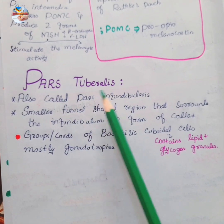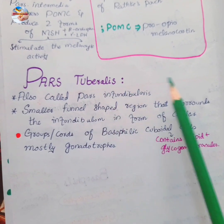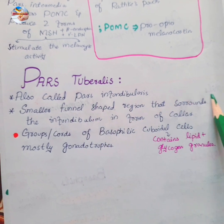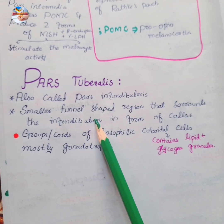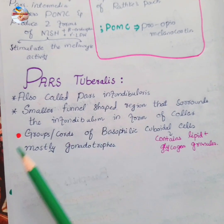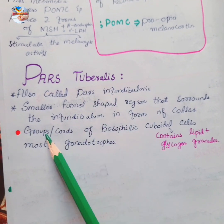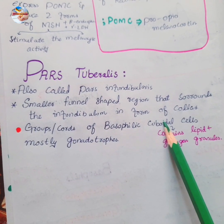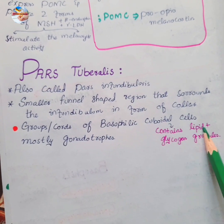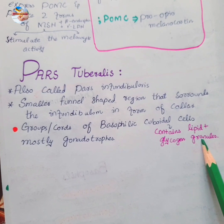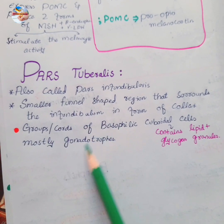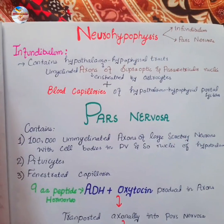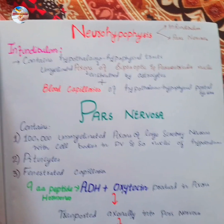The pars tuberalis, also called the pars infundibularis, represents a small funnel-shaped region that surrounds the infundibulum in the form of a collar. It contains groups and cords of basophilic cuboidal cells, which contain lipid and glycogen granules. Most of these basophilic cells are gonadotrophs in nature.